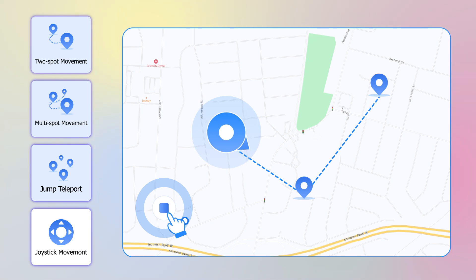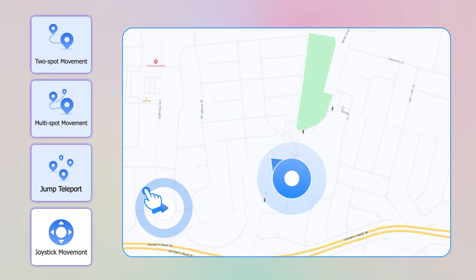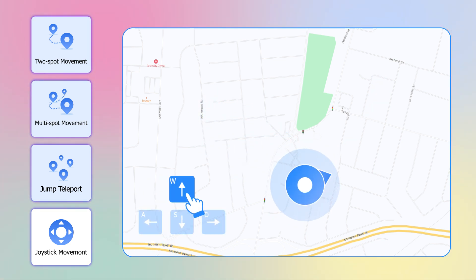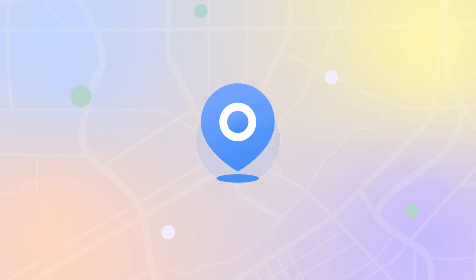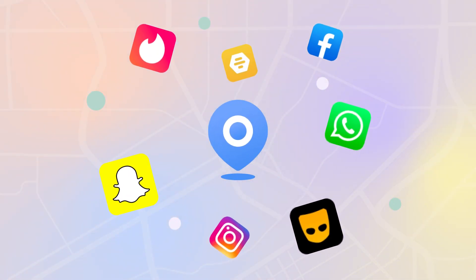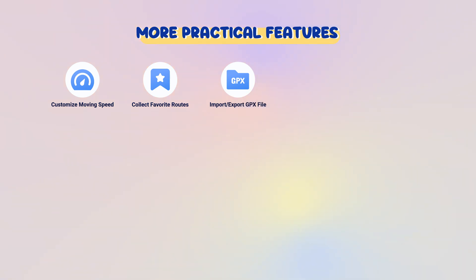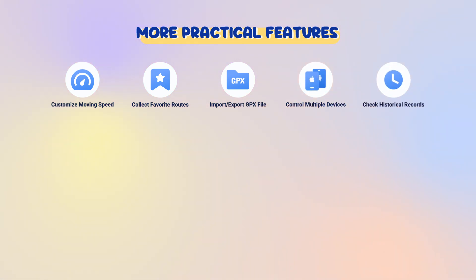It offers three virtual GPS motion modes: two-spot movement, multi-spot movement, and jump teleport. It features joystick control, allowing one to move automatically and 360 degrees, as well as using a keyboard to control movement. You can use it to change your location on most location-based services and software. It also has more features including customized moving speed, collecting favorite routes, and importing or exporting GPX files.